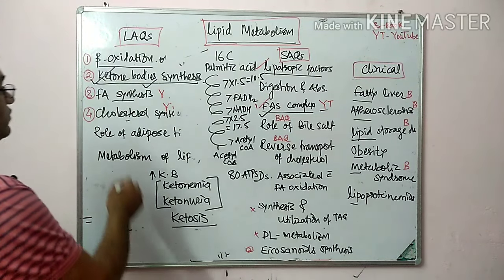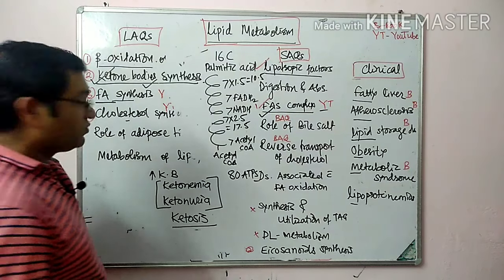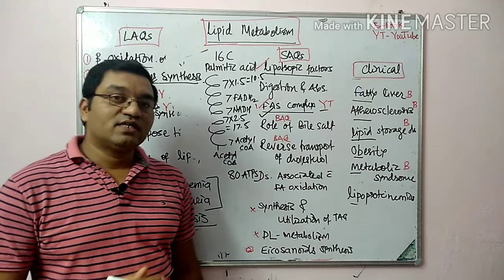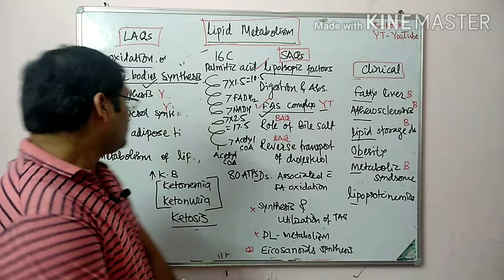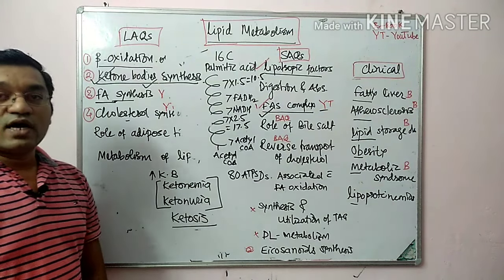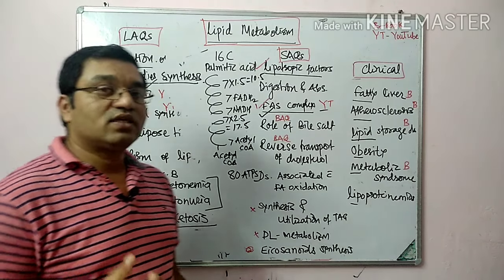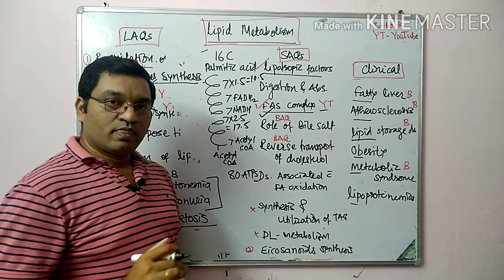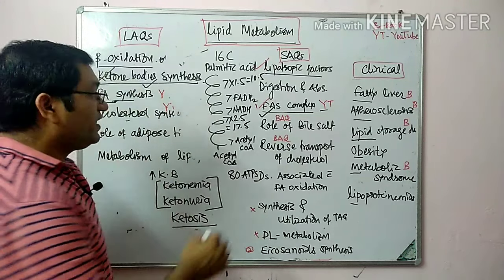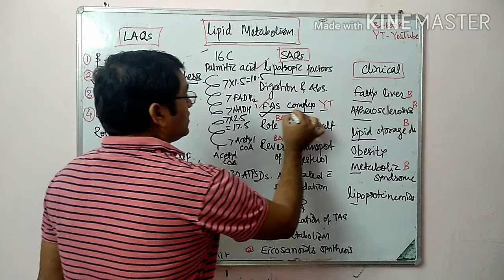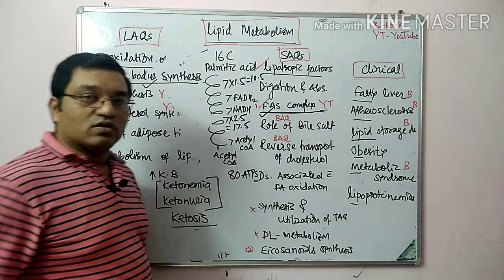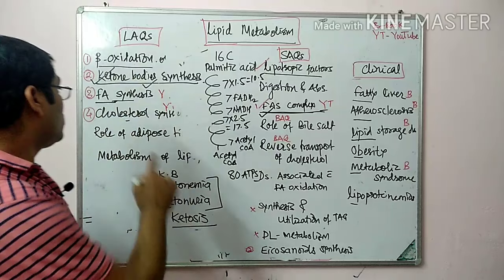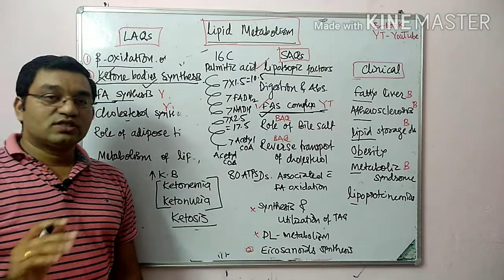The third important question is fatty acid synthesis. The first and regulated step is catalyzed by acetyl-CoA carboxylase, in which acetyl-CoA is converted into malonyl-CoA. Through the fatty acid synthesis complex, generation of fatty acids occurs. Please see the YouTube video on de novo synthesis of fatty acids for detailed information.